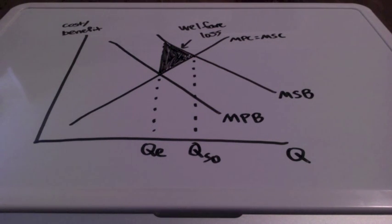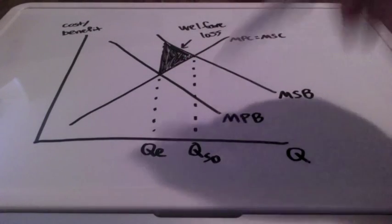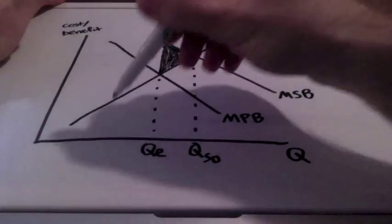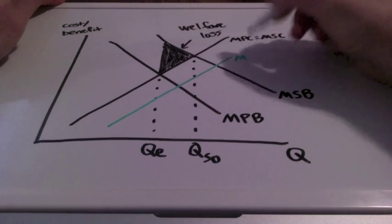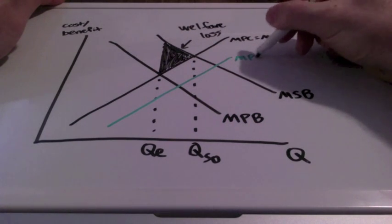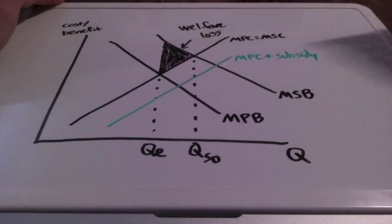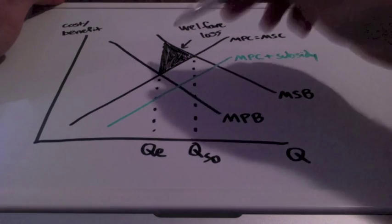The welfare can be gained by increasing the quantity of consumption — we want to have more people get flu shots, immunization shots. So what could the government do? One way to increase the quantity consumed to the socially optimal level and eliminate this welfare loss is through a subsidy. A subsidy is going to shift the supply curve, the marginal private cost, to the right. This is MPC plus subsidy, and our goal is to get closer to the socially optimal level and eliminate this welfare loss.